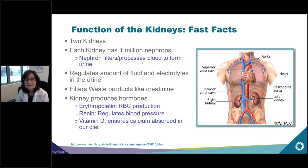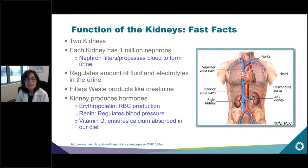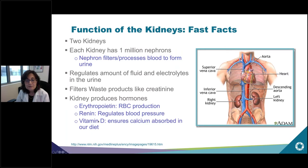Before we get to the electrolytes, let's talk about the kidneys, because the kidneys primarily govern the electrolyte panel. We all have two kidneys, each composed of about one million nephrons. The nephron filters and processes blood to form urine, regulating fluid and electrolytes and filtering waste products like creatinine. The kidney also produces several hormones: erythropoietin for red cell production, renin to regulate blood pressure, and the active form of vitamin D to ensure calcium absorption.